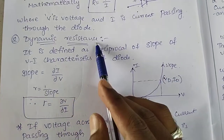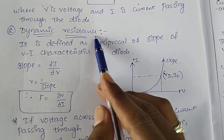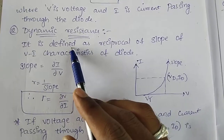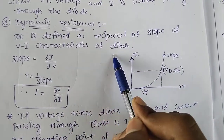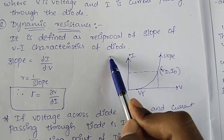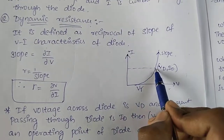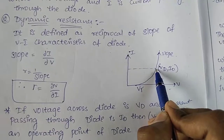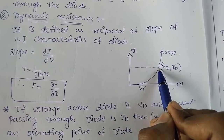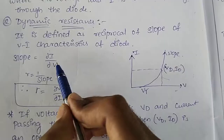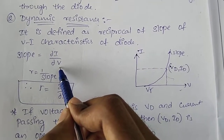Now we will learn about dynamic resistance. Dynamic resistance is defined as the reciprocal of the slope of the V-I characteristics of a diode. From the V-I characteristics, we take the slope and its reciprocal gives us the dynamic resistance.